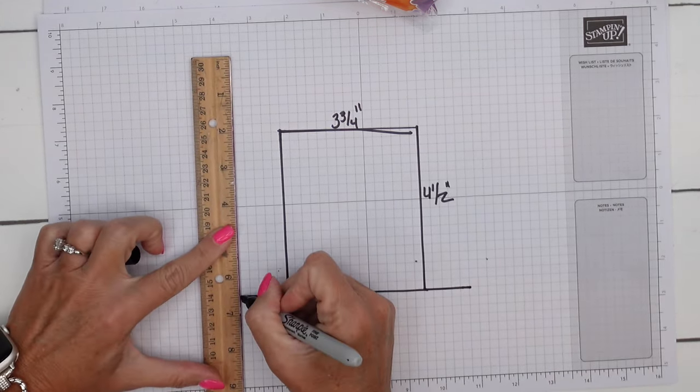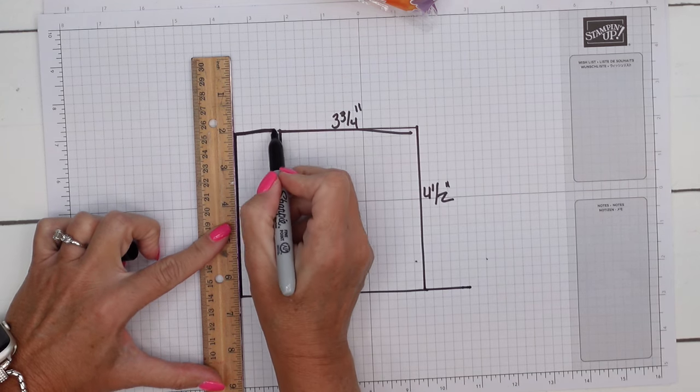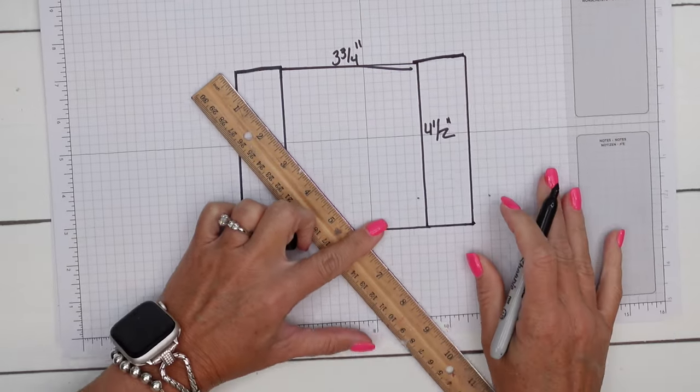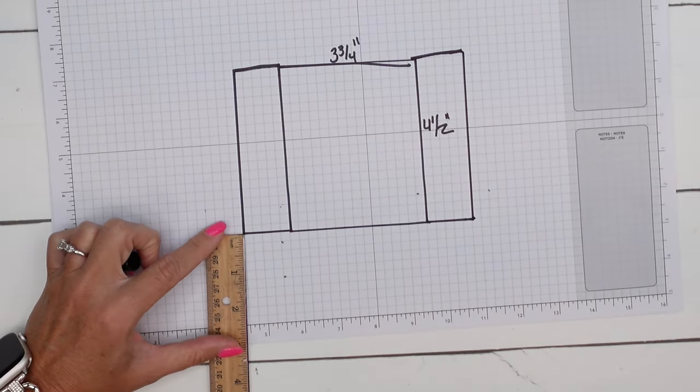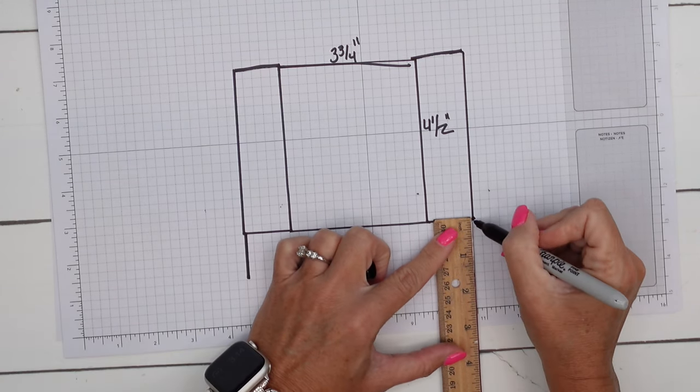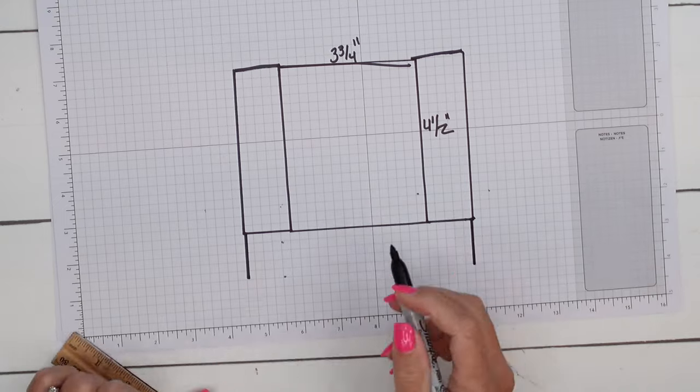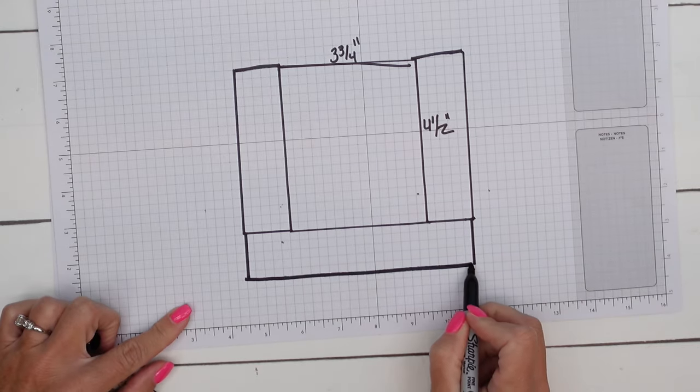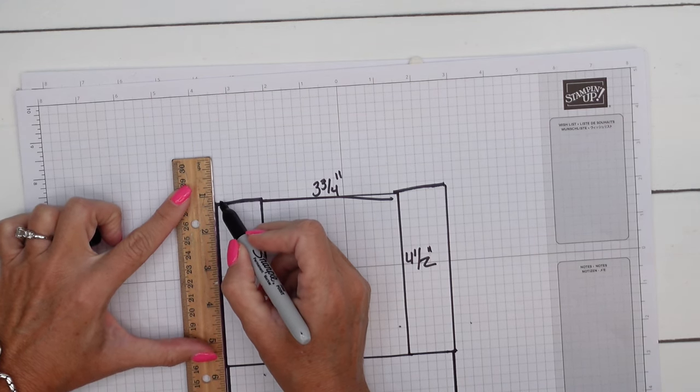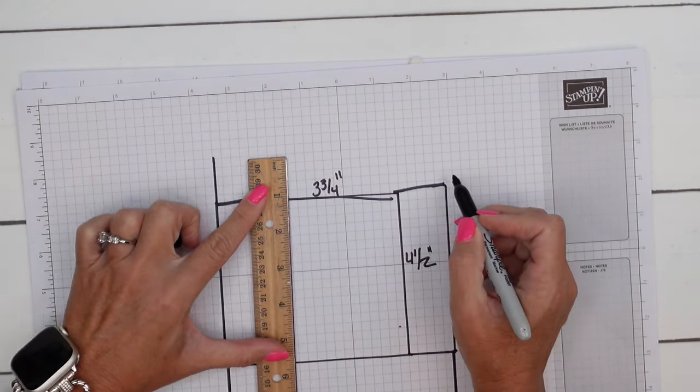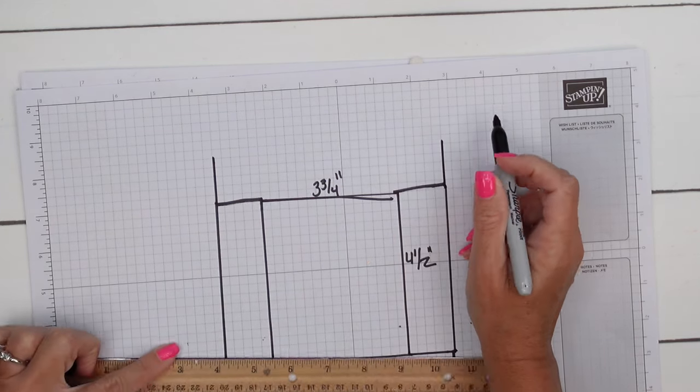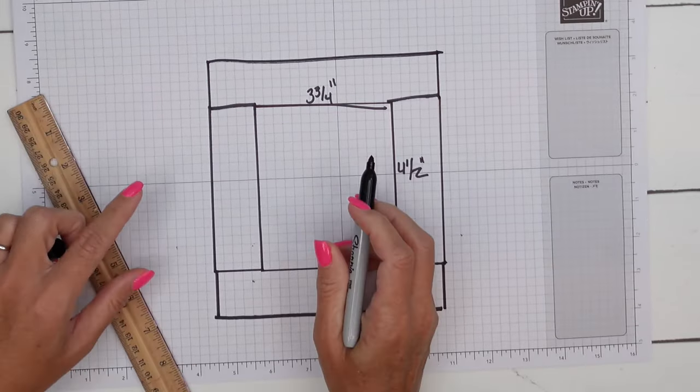Then we'll measure those lines up. And then we're going to do the same thing on the top and the bottom. So one and a fourth, one and a fourth. And your grid paper has got these grid lines. Every square is a quarter inch, so that kind of helps you. If you use this to design, then you can easily count off your measurements using those grid lines.